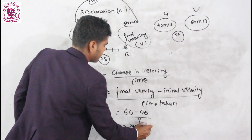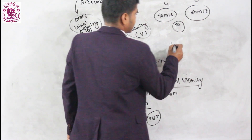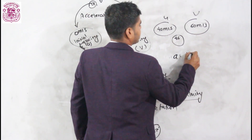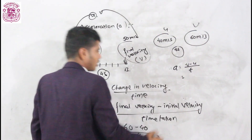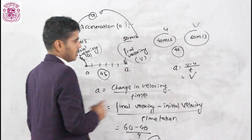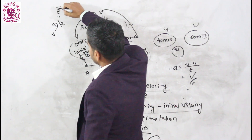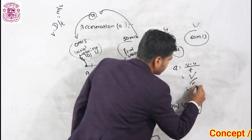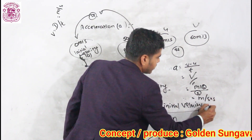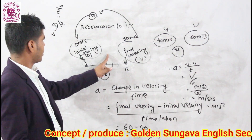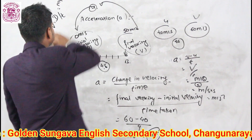That gives 20 divided by 4, which equals 5 meters per second squared. The unit is derived as follows: acceleration equals velocity divided by time T. Velocity has unit meter per second, divided by second, gives meter per second squared. So the unit of acceleration is meter per second squared, whereas velocity has unit meter per second.